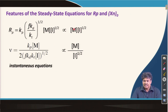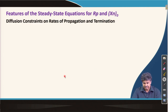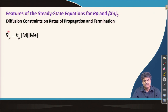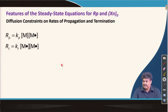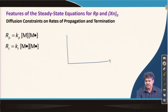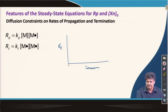As monomer and initiator concentrations keep changing, these rate equations are instantaneous equations. Additionally, diffusion of radical species can also affect the rates of propagation and termination. Rate of propagation involves one radical and one monomer, whereas termination involves two radical species.